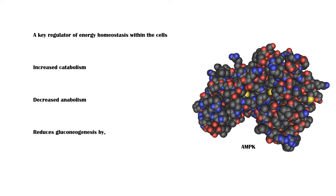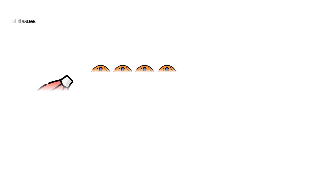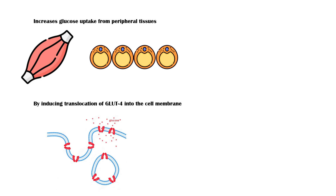It reduces gluconeogenesis by inhibiting genes responsible for the synthesis of PP carboxykinase and glucose 6-phosphatase, which are key enzymes in the gluconeogenesis pathway. It also increases glucose uptake from peripheral tissues, especially the muscle and fat tissues, by inducing translocation of GLUT4 into the cell membrane.